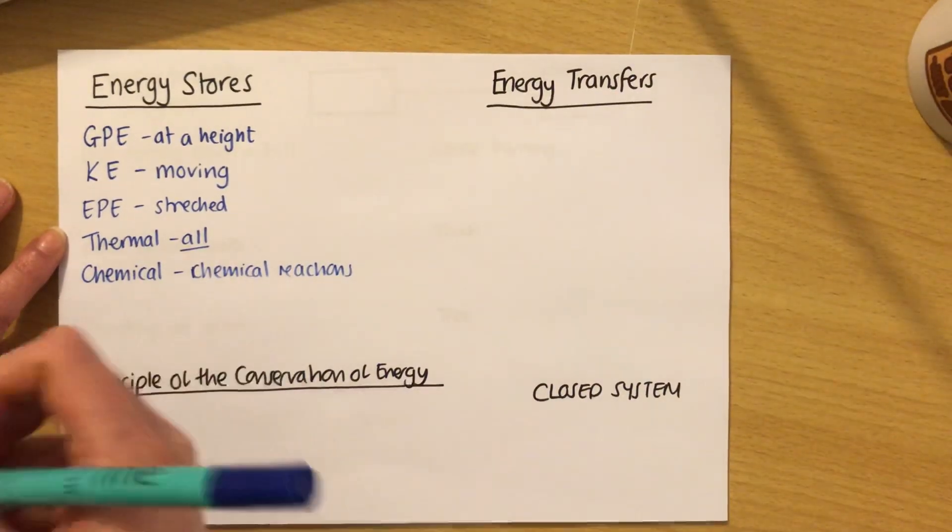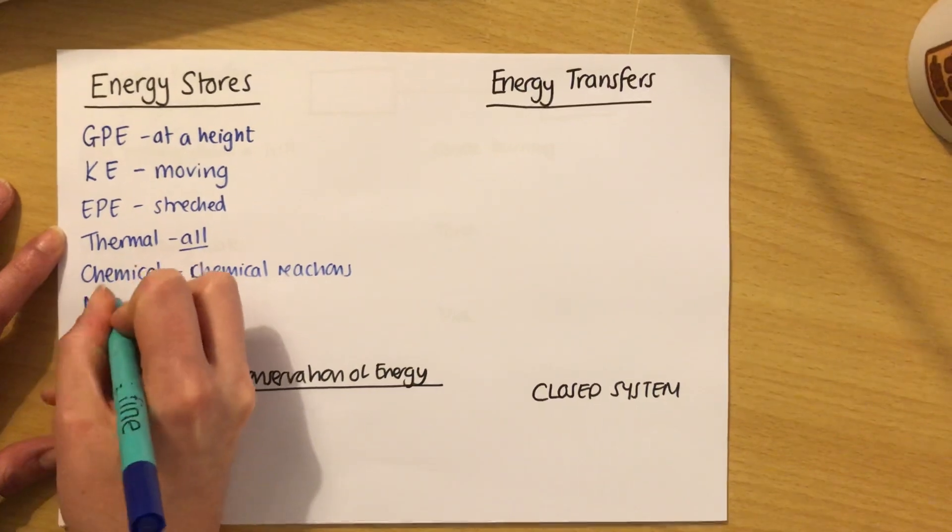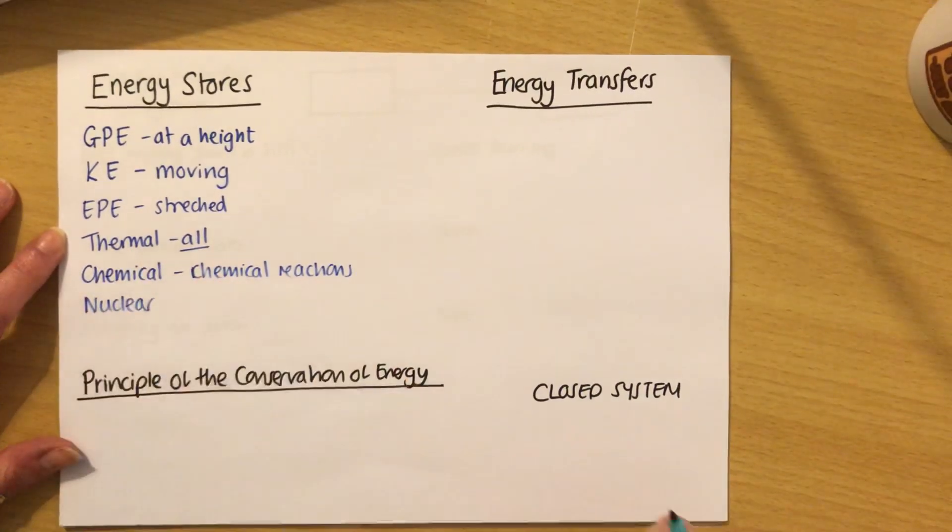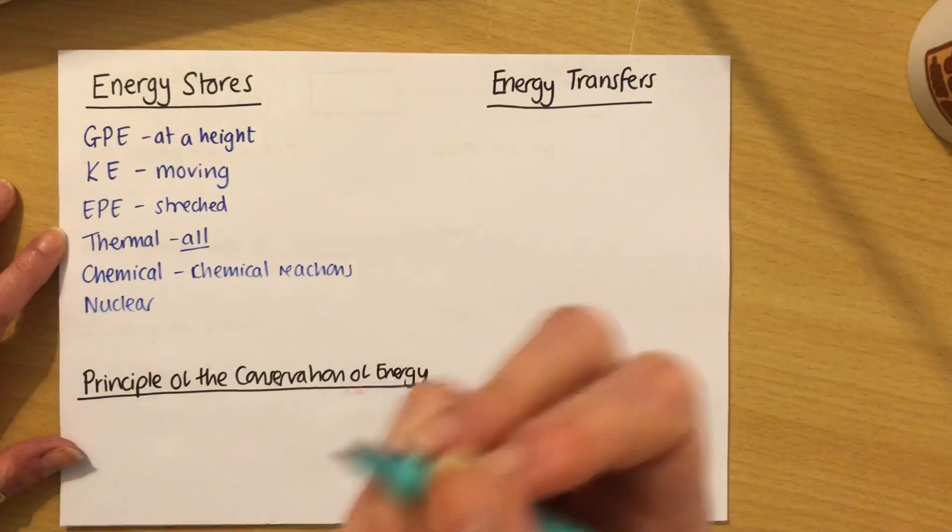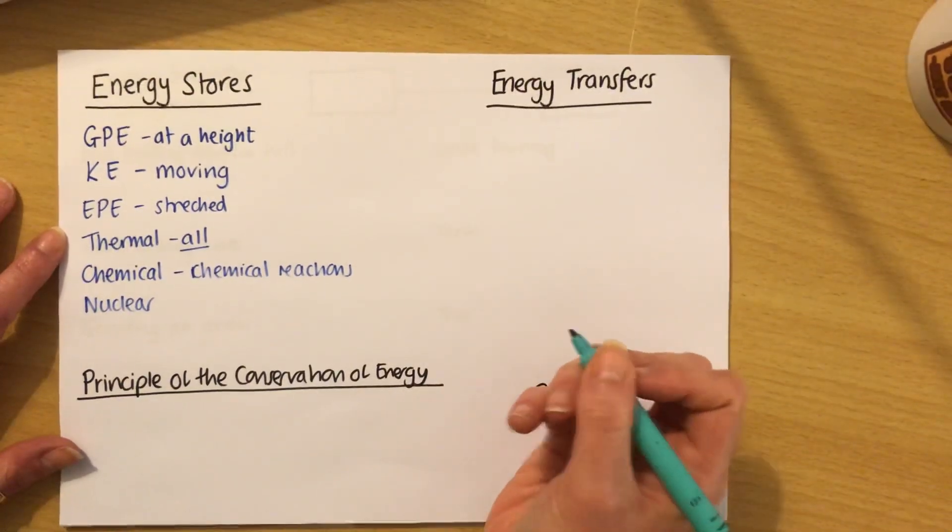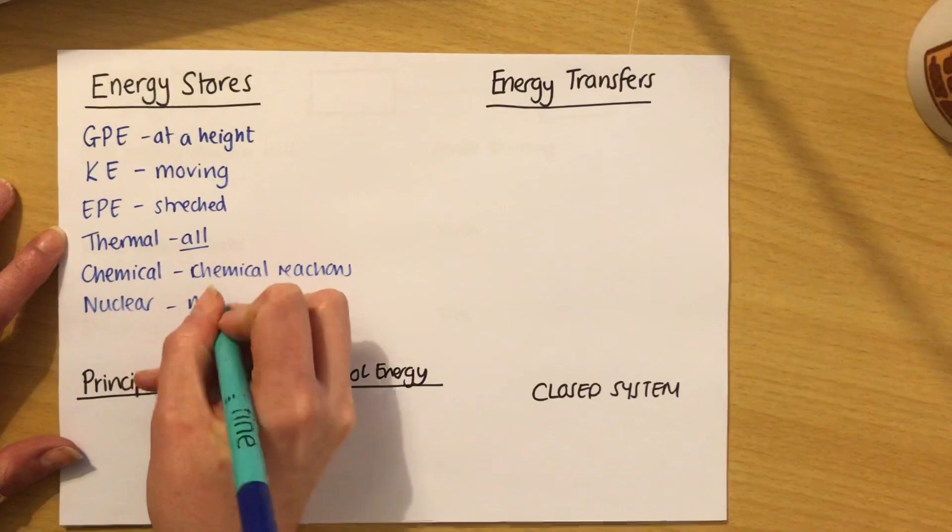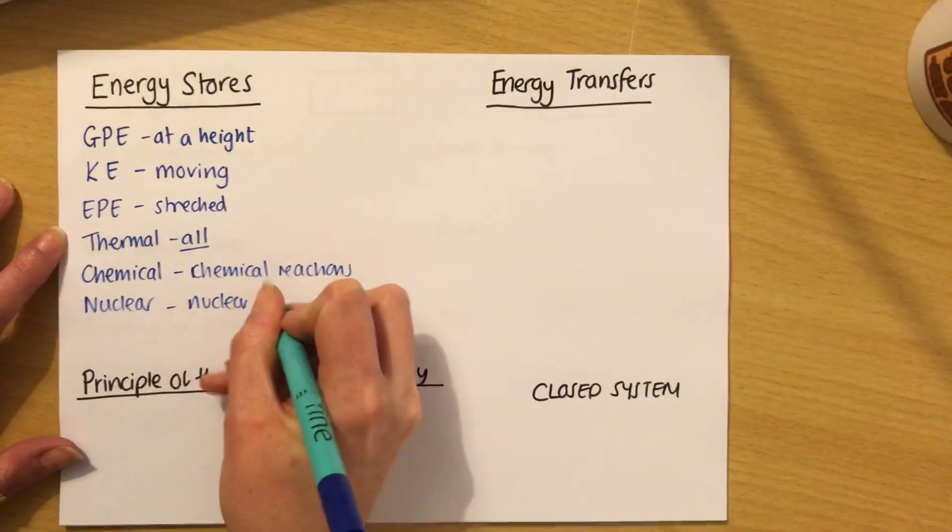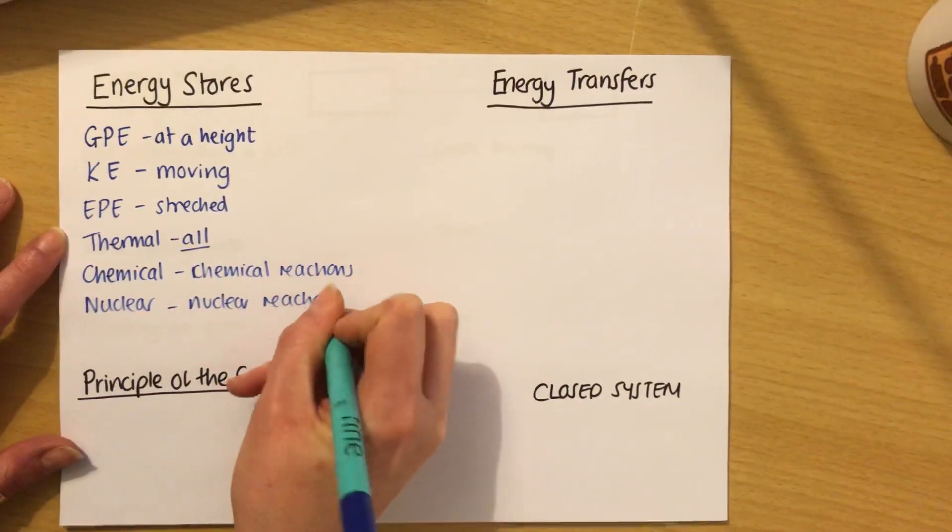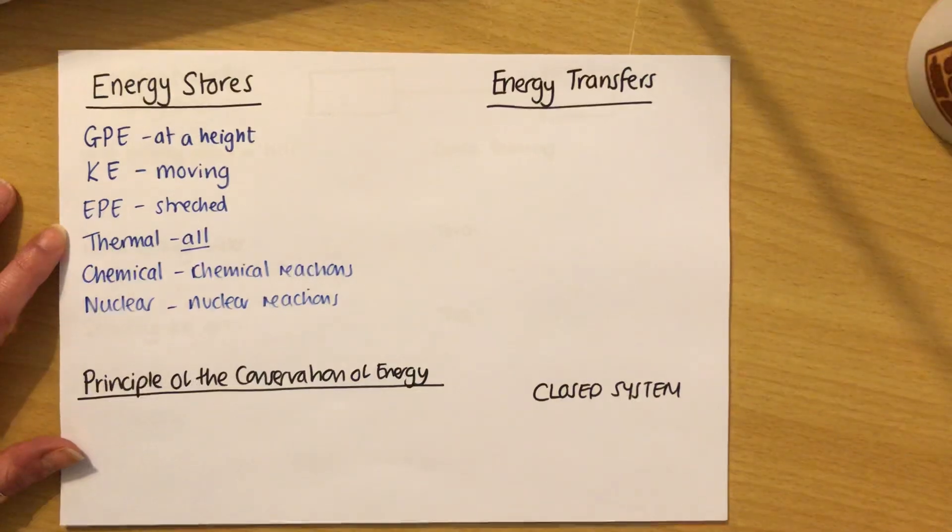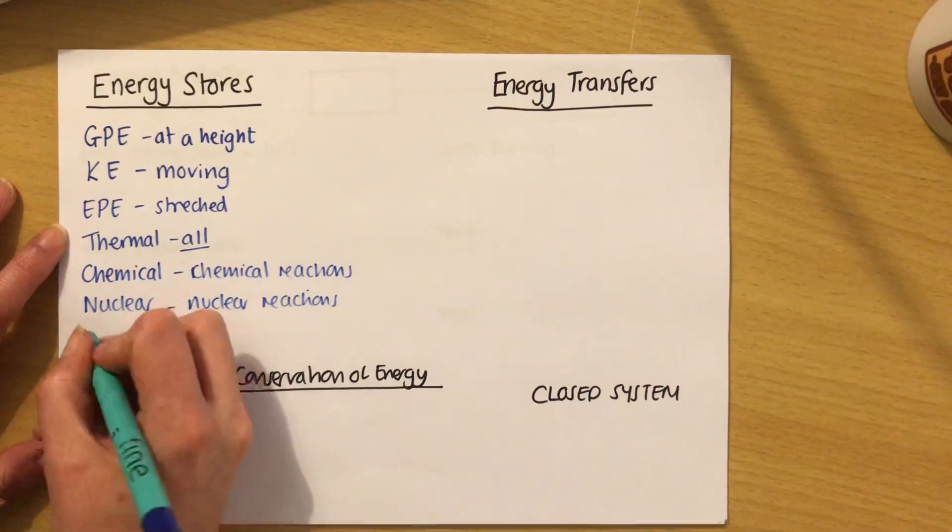Similar to chemical but more physics-y, we have nuclear energy. That's the energy that things have if they can perform nuclear reactions. It's the energy that's held in the nucleus of the atom. So I'll write nuclear reactions here. For example, in nuclear fission or nuclear fusion, that's nuclear energy that you're releasing.